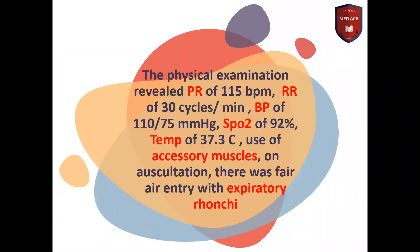Physical examination revealed a pulse rate of 115 per minute, respiratory rate of 30 cycles per minute, blood pressure of 110 over 75 mmHg, SpO2 of 92%, and temperature of 37.3°C. There was use of accessory muscles, which is an important sign of respiratory distress.